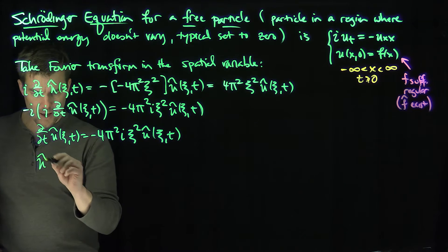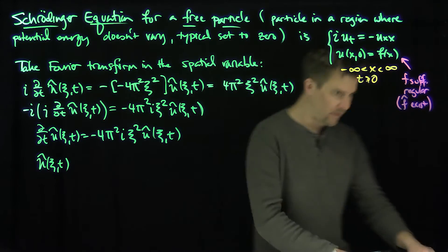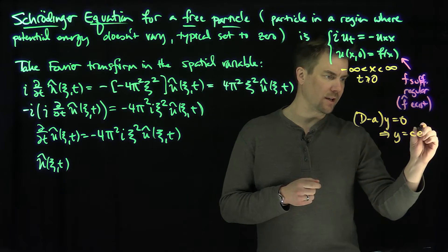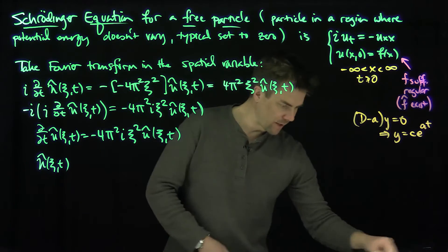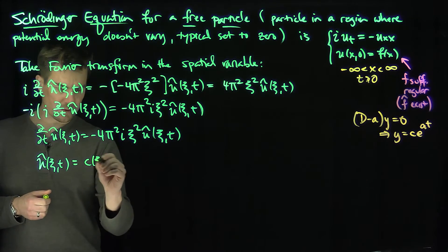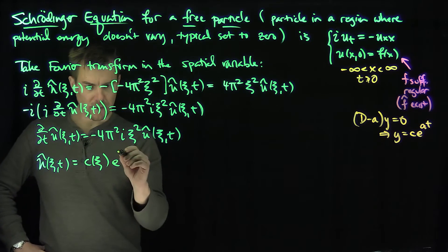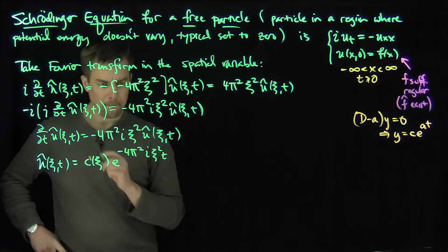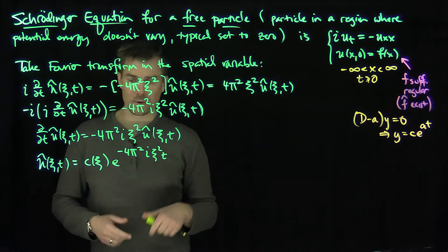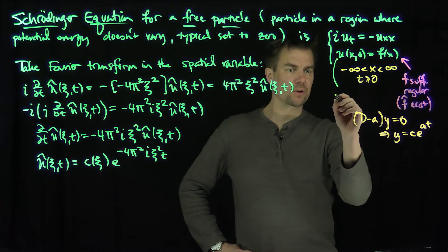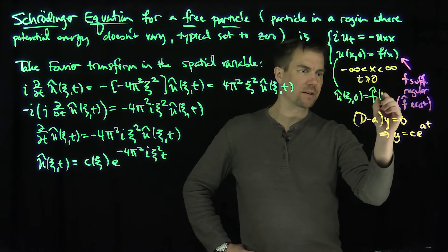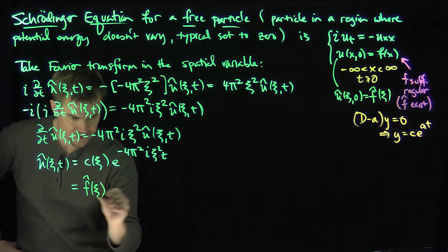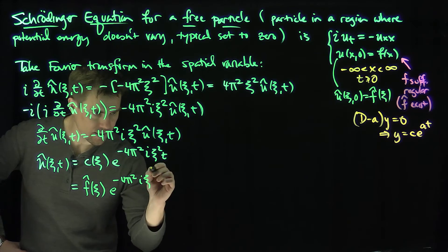The solution is û(ξ, t) = C(ξ) · e^(−4π²i ξ² t), using the standard ODE solution form. Plugging in the initial condition, û(ξ, 0) = f̂(ξ), tells us C(ξ) = f̂(ξ). Therefore the solution is û(ξ, t) = f̂(ξ) · e^(−4π²i ξ² t).